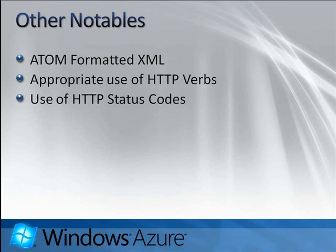Some other notables inside Azure Table Storage: our standard representation format is Atom, we use HTTP verbs appropriately, and we pass the appropriate status codes — so a 200 means everything worked, a 404 means you weren't able to find that resource, and so on. It's probably easiest for me to show you how to issue a RESTful call to Azure Table Storage. Before I do that, I want to note that what you're going to see here may look like quite a bit of work, but as we'll see in part two and a future screencast, we've taken great steps to alleviate the amount of effort required to access Azure Table Storage.